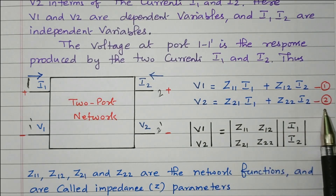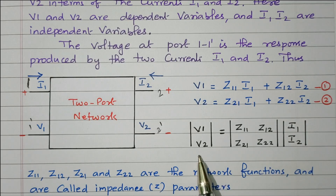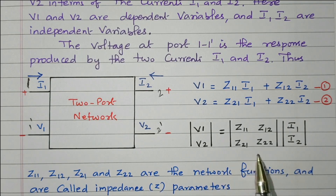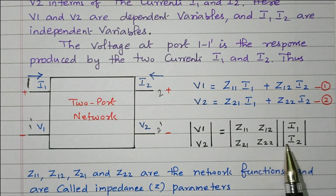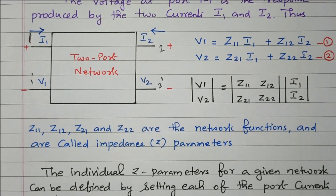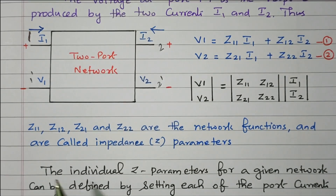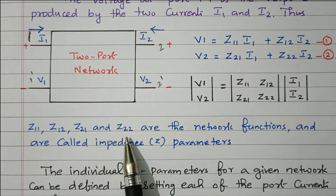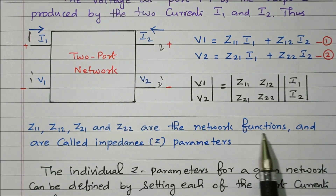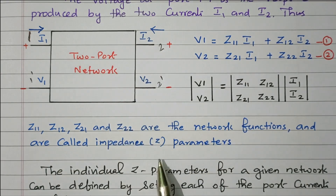Taking these as equation 1 and equation 2, in matrix form we can write this as the voltage matrix [V1, V2] equals the impedance matrix [Z11, Z12; Z21, Z22] multiplied by the current matrix [I1, I2]. Z11, Z12, Z21, and Z22 are the network functions and are called the impedance parameters, or Z parameters.